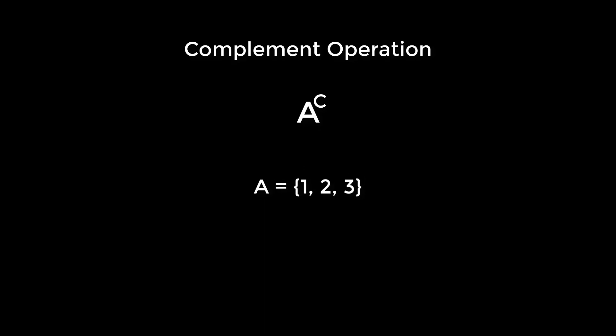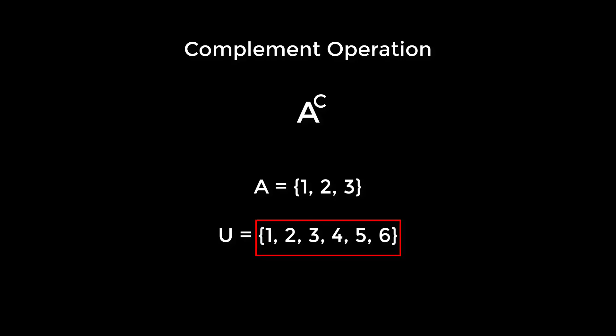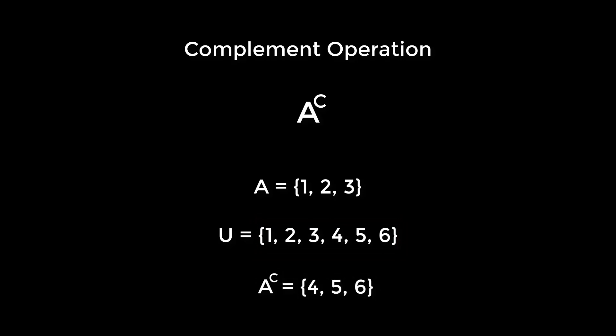Suppose you have a set A. The notation to express the complement of A uses a small superscript 'c' on the set notation. Suppose A is the set {1, 2, 3} and the universal set contains elements {1, 2, 3, 4, 5, 6} — meaning there are no other elements in the universe except these six. Then A complement refers to all elements which are not elements of A, so A complement is {4, 5, 6}.